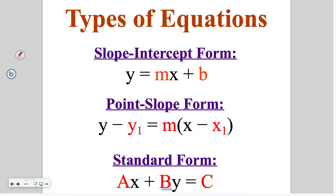There are many different scenarios when you would use each of these different equations, and it is often helpful to be able to convert between the three of them. Slope-intercept form is often the easiest for people to graph. Point-slope form is usually the easiest to start because you are given a slope and another point to plug in. Standard form is often used when setting up word problems. We are going to talk about how we can relate all of them so you can convert between the forms.